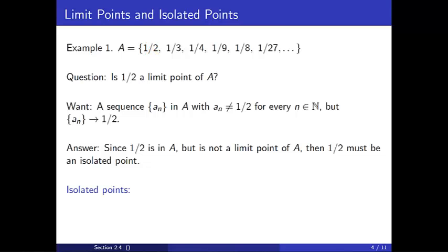What are the other isolated points of A? Well, similar to our above argument, 1/3, 1/4, 1/9, 1/8, and 1/27 are all isolated points. We cannot find a sequence of points in A converging to any of these values. In fact, every point of A is an isolated point, and the only limit point of A is 0.